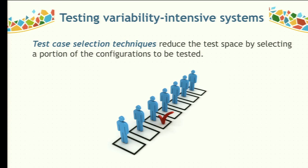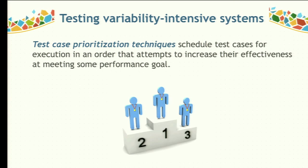To alleviate this problem, many contributions have been proposed. Test case selection techniques are among the most important, reducing the test space by selecting a portion of configurations to be tested. However, the number of configurations resulting from these techniques could still be high and expensive to run. This is especially costly during regression testing, when you have to repeatedly execute tests whenever a relevant change is made to the code.